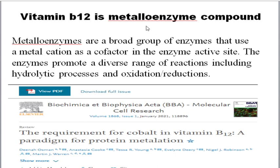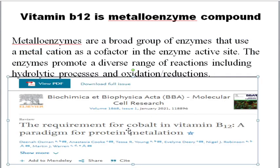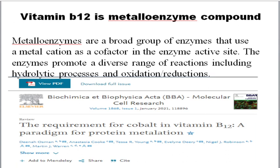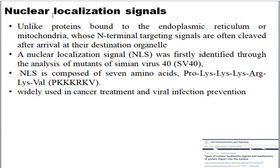Next is a question about vitamin B12 and metalloenzymes. Metalloenzymes are a broad group of enzymes that carry a metal cation as a cofactor and have diverse roles in hydrolytic and oxidation reactions. With respect to vitamin B12, which is itself a metalloenzyme, the metal used is cobalt. As described in an article published in January 2021, cobalt is required for vitamin B12. So the correct option is cobalt.